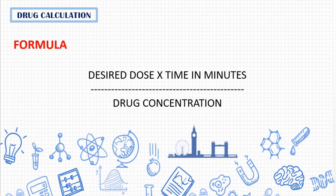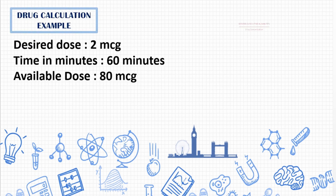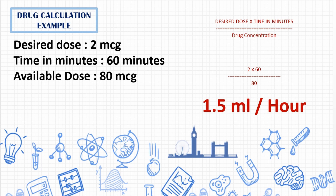The formula used to calculate the infusion rate is: desired dose (mcg/min) × time in minutes ÷ drug concentration. For example, if the desired dose is 2 mcg/min, time is 60 minutes, and the available concentration is 80 mcg/ml (single strength — 4 ml of noradrenaline with 46 ml normal saline), the calculation is: 2 × 60 ÷ 80 = 1.5 ml per hour. For double strength, divide by 160 instead.